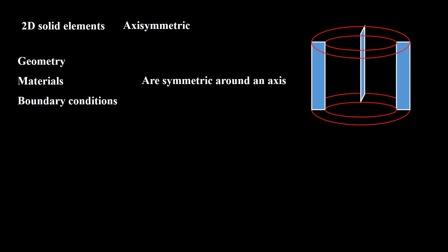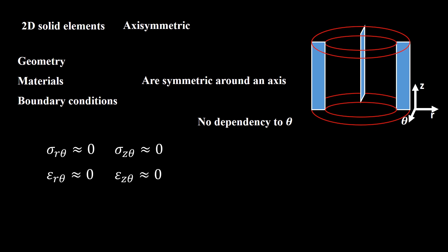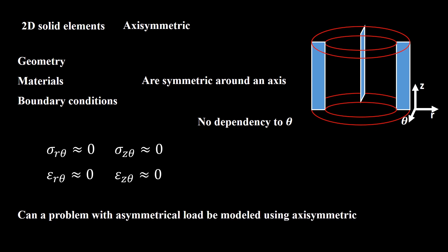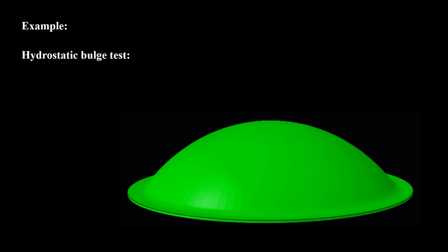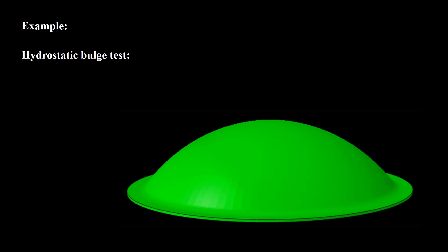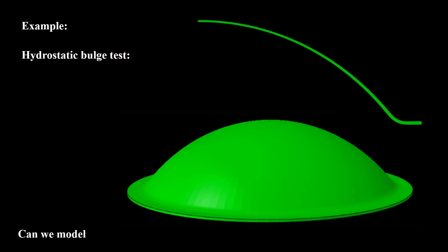When the geometry, materials, and boundary conditions are symmetric around an axis, we can use axisymmetric elements — all parameters do not depend on the tangential direction, and the corresponding strain and stress components are zero. For an axisymmetric problem we model one half of the cross-section and use 2D elements to discretize it. Can a problem with asymmetrical load be modeled using axisymmetric elements? If you are interested, please watch the linked video. Returning to our example: the hydrostatic bulge forming process has geometry, material, and boundary conditions symmetric around the axis, so we can use axisymmetric modeling. As mentioned earlier, shell elements are also valid for this process.